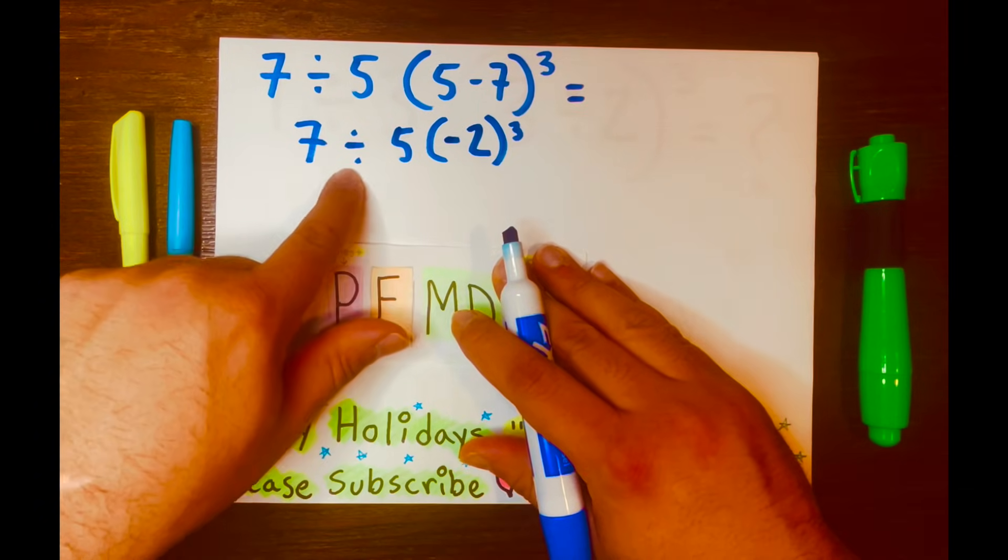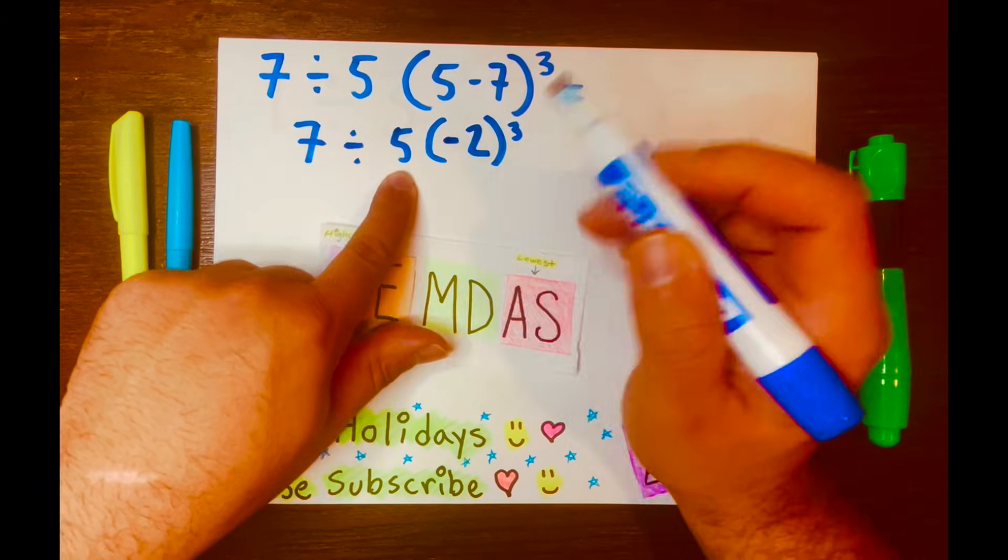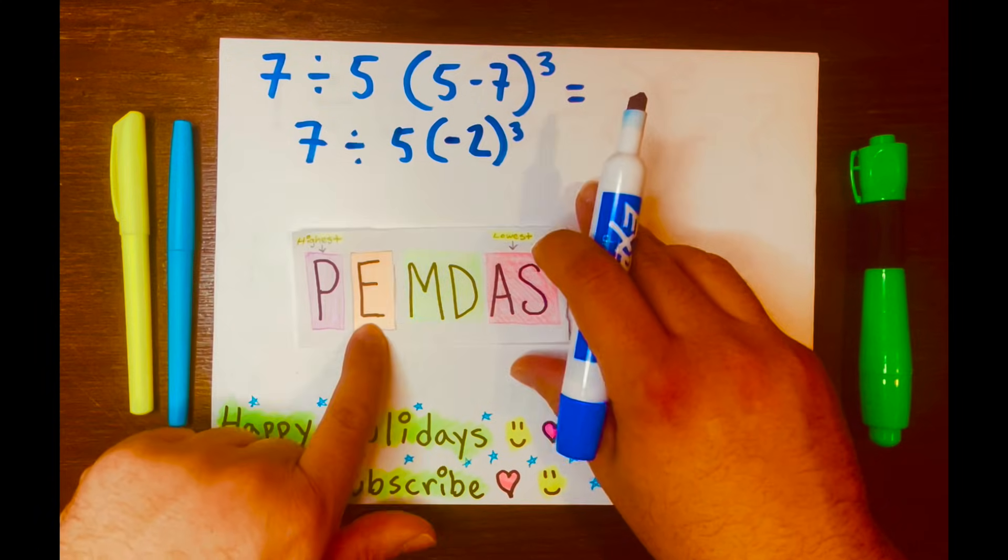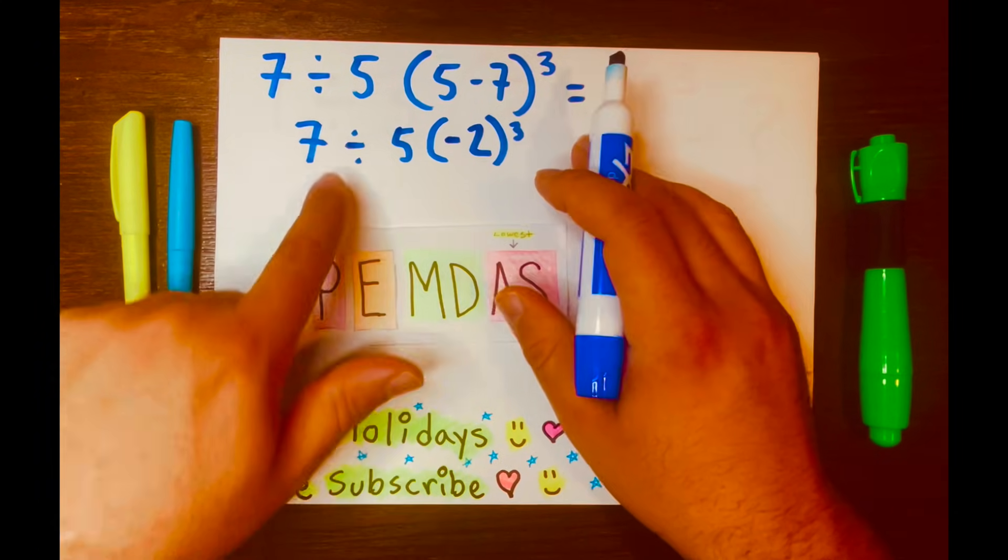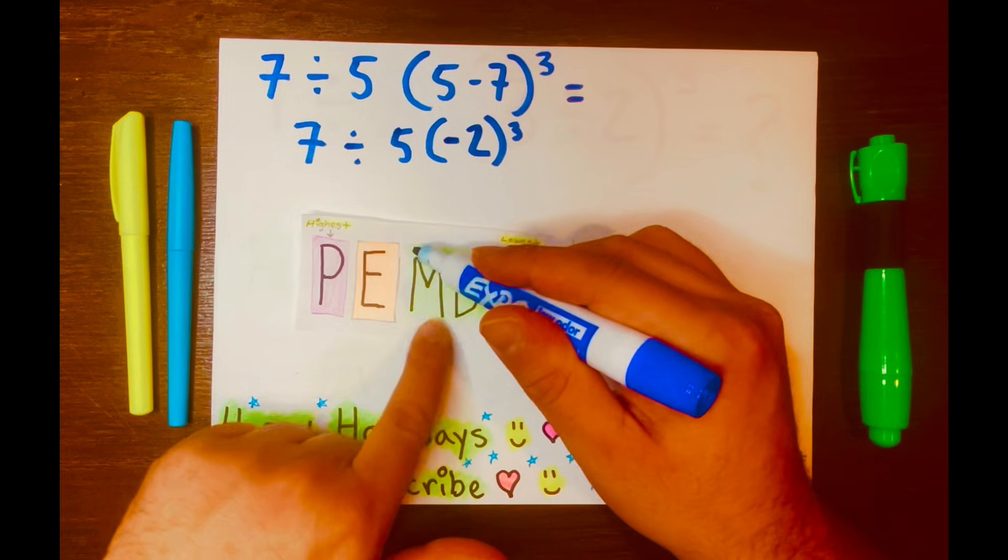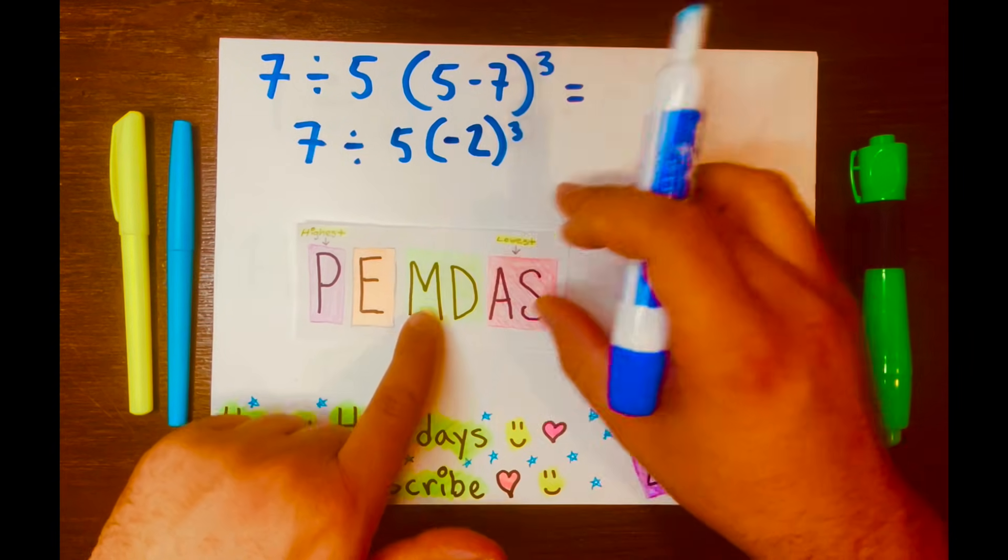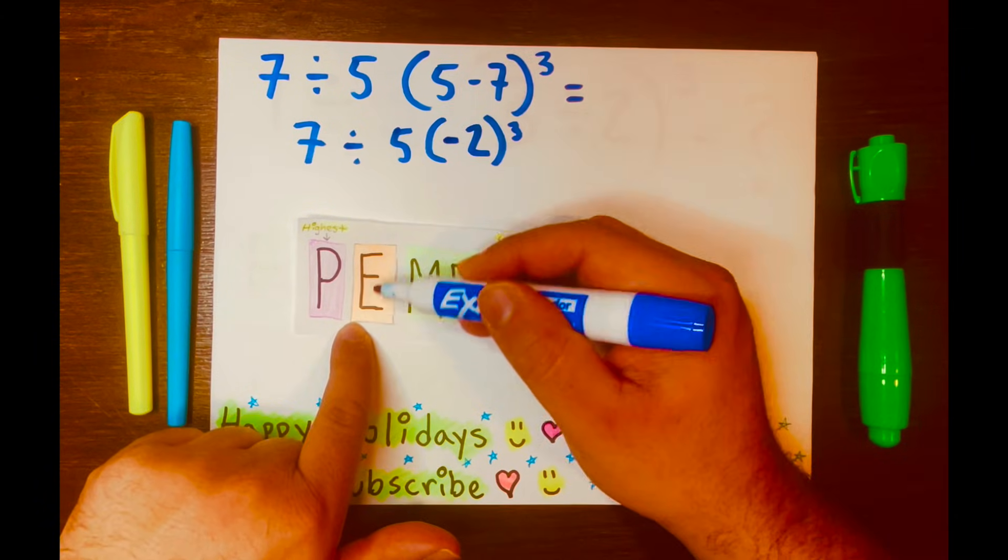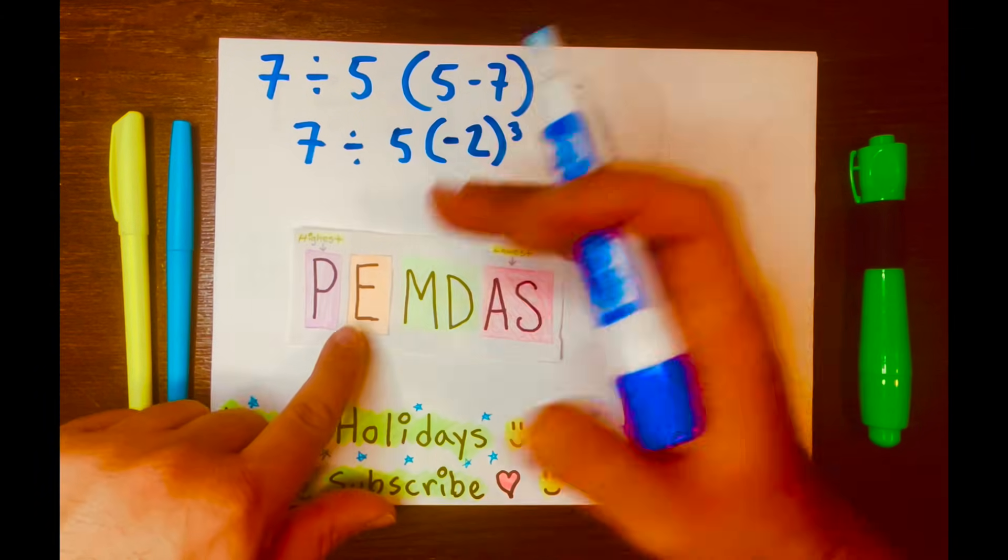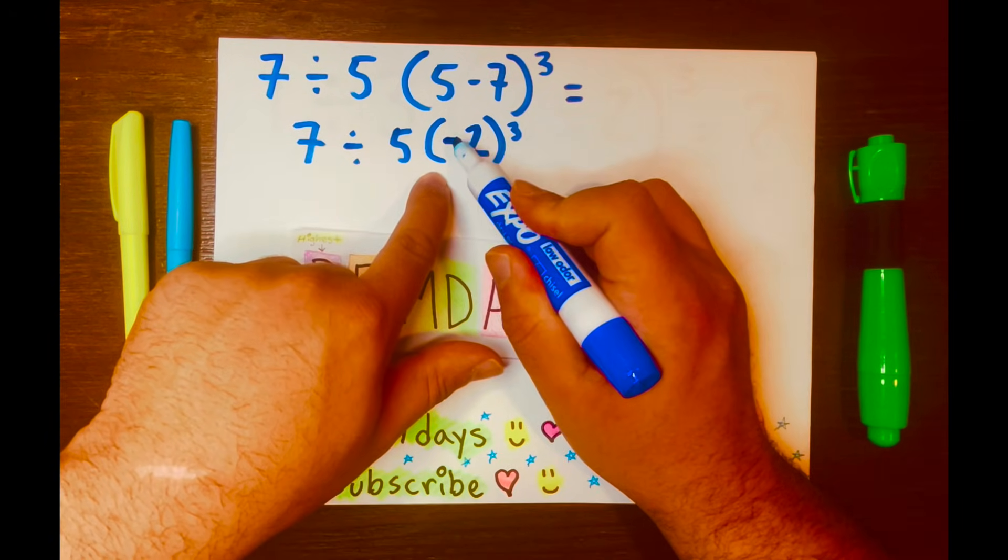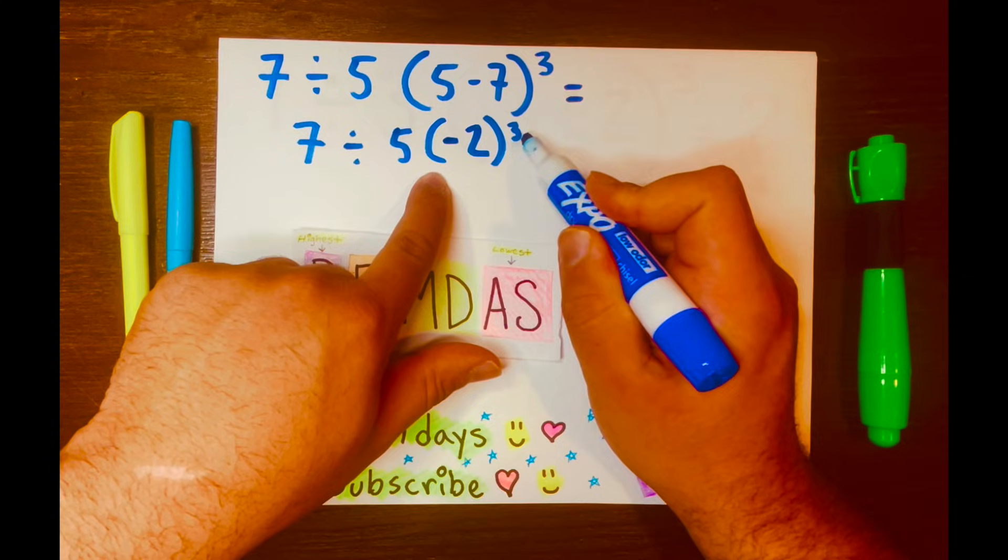Now, we have 7 divided by 5 times negative 2 with an exponent of 3. Exponent will go first, not division. That is the third box or level in PEMDAS. And exponent is the second box or level in PEMDAS.